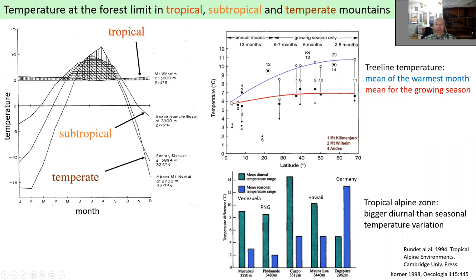At the equator, the temperature of the warmest month is pretty much equal to the mean temperature for the growing season, which means the entire year. The more you get to the north, the bigger difference there is. The mean for the growing season is pretty much constant - because we are talking not about a certain elevation, but about the timberline, which is basically a physiological plant limit, not an elevation limit. The temperature of the warmest month is increasing the further north we go, because that temperature becomes necessary to create a sufficient number of degree days for trees to survive.